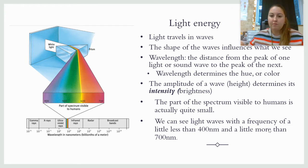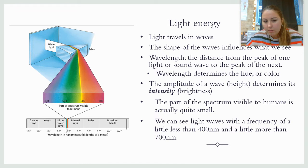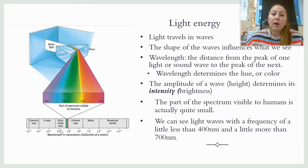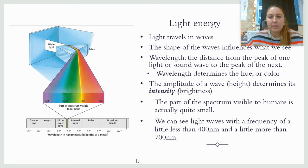The amplitude, or the height of the wave, determines the intensity — so its brightness. Now there is a very large spectrum of electromagnetic energy, and we can only see this tiny little portion. Gamma rays, X-rays, ultraviolet rays — we do not have receptors able to see those. Same thing with infrared, radar, and broadcast bands — those are too large. We can only see light waves with a frequency of a little less than 400 nanometers and a little more than 700 nanometers. It's a very limited range that humans have.